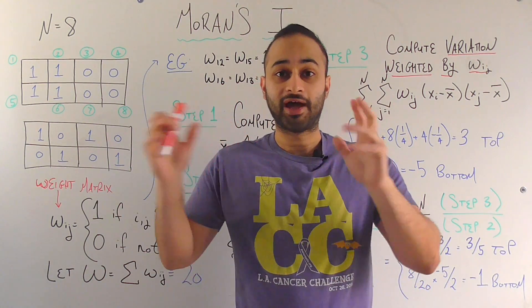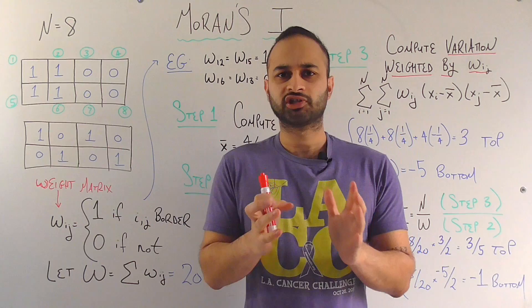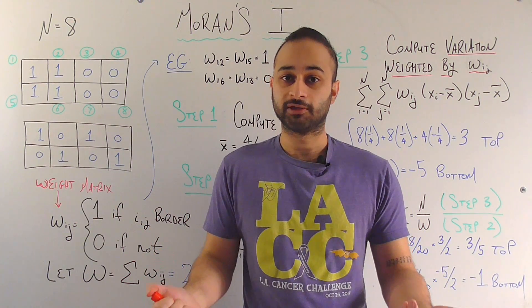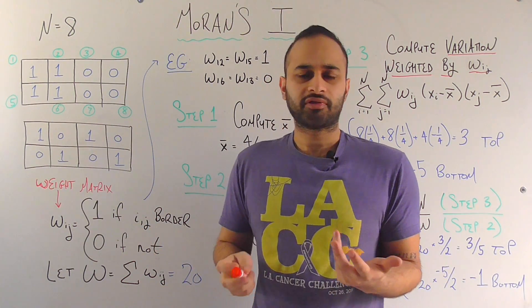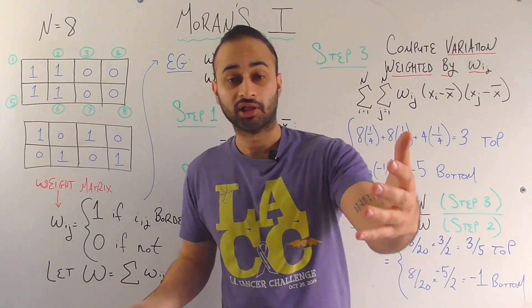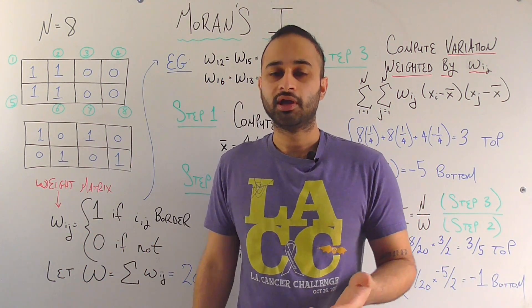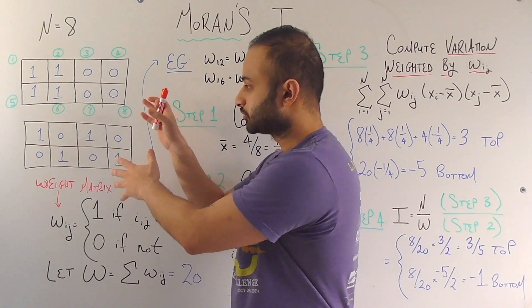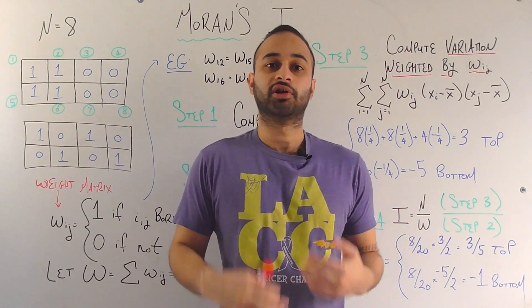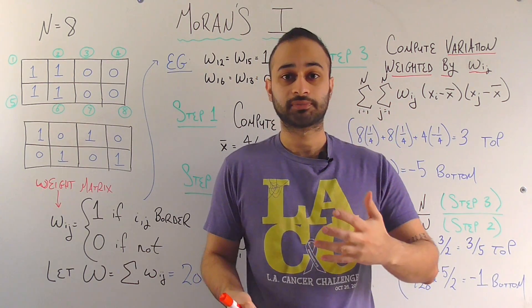Instead of going into that complicated example, let's look at a smaller one. Rather than just give you the formula for Moran's I, on this channel I don't like to just throw formulas at you because I don't see that as an effective method of teaching. Instead we'll look at two examples and build up the formula, so that by the end you'll have the formula but also understand what each component means.